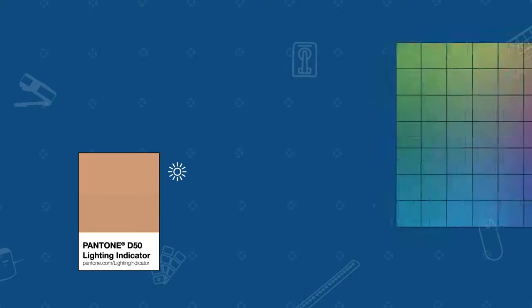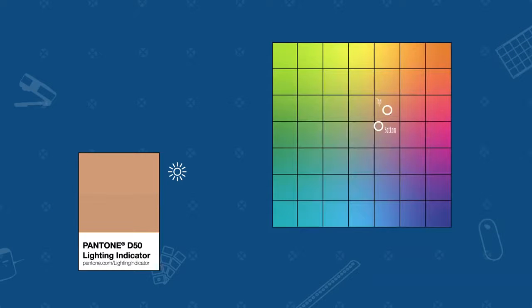Here we have a Pantone D50 lighting indicator. Under daylight, we can visually see that the color on the top half and the bottom half closely match. If we measure and plot both halves in CLAB, the two colors appear identical and the numerical color difference is very small.